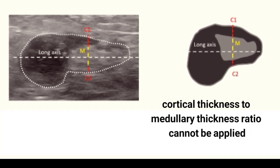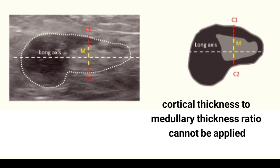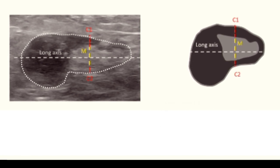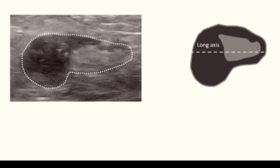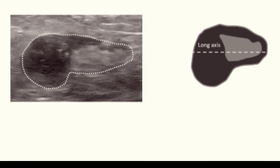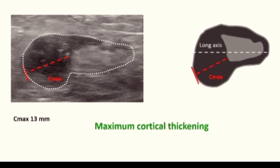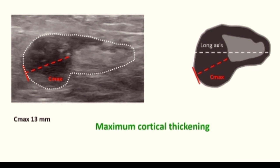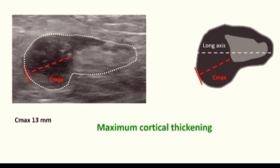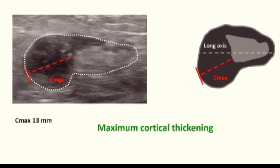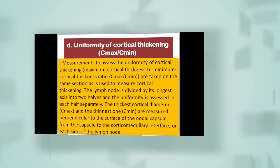In this case, instead of the ratio, we should pay attention to the maximum cortical thickening — Cmax — which is measured from the corticomedullary interface perpendicular to the nodal outer contour. The cutoff of Cmax which may be predictive for metastatic lymph nodes needs to be defined later.